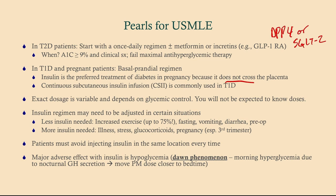Fasting, vomiting, diarrhea, and pre-op will reduce your insulin demand. More insulin would be needed in times of illness or stress — that's why we use the sliding scale, particularly in the inpatient setting. If they're on glucocorticoids, that's going to ramp up your production of sugar through gluconeogenesis, so you're going to need more insulin. And then pregnancy — human placental lactogen increases insulin resistance, so pregnant women will likely need to go up on their insulin as the pregnancy progresses.